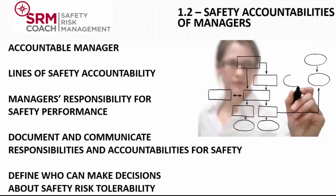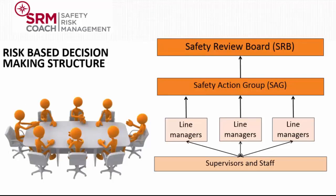It is very important to define the management level which has the authority to make decisions regarding safety risk tolerability. The safety review board is a high-level committee which considers strategic safety functions and is applicable to large organizations. The board should be chaired by the accountable manager and should normally include directors and senior management. The safety action group reports to and takes strategic direction from the safety review board. This comprises managers, supervisors, and staff from operational areas. The safety manager may also be included, and there might be different safety action groups per department.